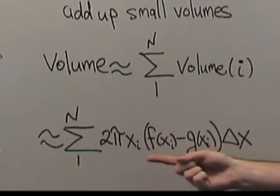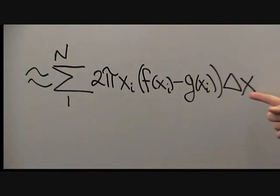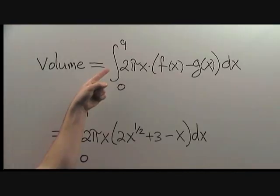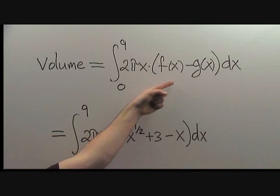This is a Riemann sum. We want to let N go to infinity and Δx go to 0. In the limit, we will recover the integral from 0 to 9 of 2πx times (f(x) - g(x))dx.